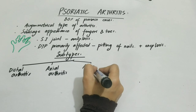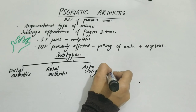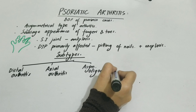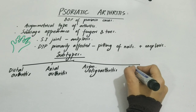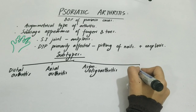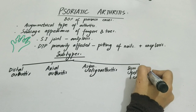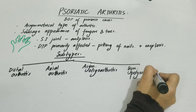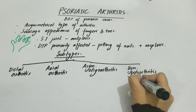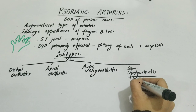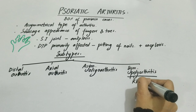Besides sausage appearance, we have multiple types: distal arthritis and axial arthritis. Distal arthritis involves nails and ankylosis; axial arthritis involves the sacral joint. We also have asymmetric oligoarthritis — asymmetric, meaning it does not have to be in both limbs, and oligoarthritis involves fewer than two joints. It can also be converted into polyarthritis.